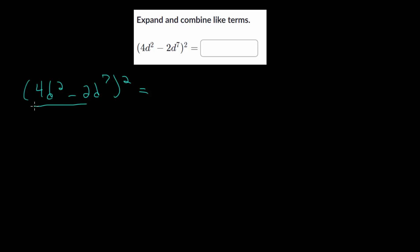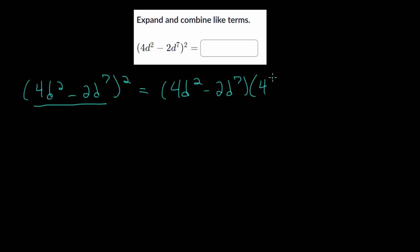Squaring something just means to take whatever your base is and multiply it twice. So we're going to take our 4d squared minus 2d to the seventh and multiply it by itself: 4d squared minus 2d to the seventh. And we will multiply these using distribution.